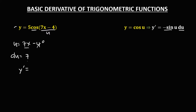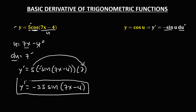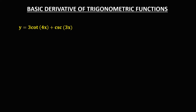To find the derivative of this trigonometric function, we have y' equals — we just need to bring down this 5 — then the derivative of cosine is negative sine(u), and u is 7x − 4, times the derivative of u, which is 7. Simplifying, 5 times 7 is 35, and since we have this negative, that's −35·sin(7x − 4). So this is now the derivative.